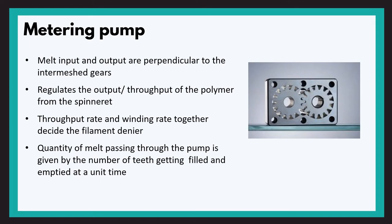Through channels of cylindrical pipes, the molten polymer is passed to the metering pump. The main objective of the metering pump is to ensure a uniform supply of molten polymer to the spin pack at all times. The pump uses two intermeshed gears; the input and output are perpendicular to these gears. The quantity of melt passing through is given by the number of gear teeth being filled and emptied per unit time. This throughput rate together with the winding-up rate decides the denier of the spun filament.